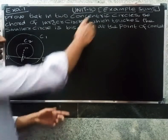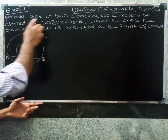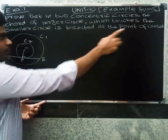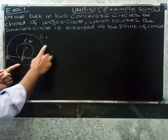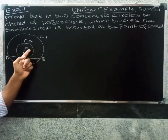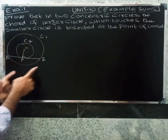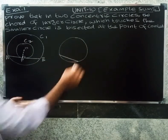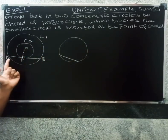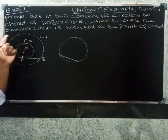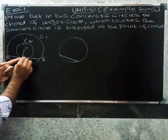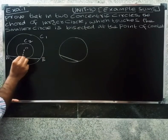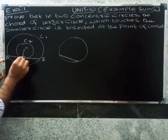Welcome. In this unit, we have examples. Example one: prove that in two concentric circles, the chord of a larger circle which touches the smaller circle is bisected at the point of contact. So the chord of the larger circle touches the smaller circle and is bisected at the point of contact.